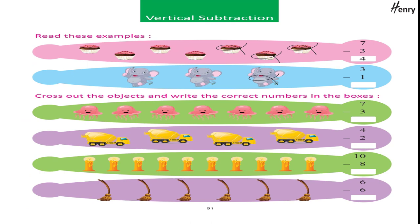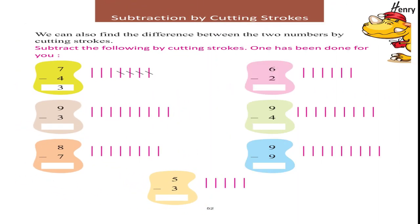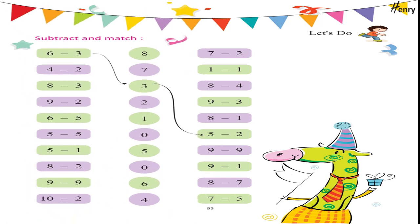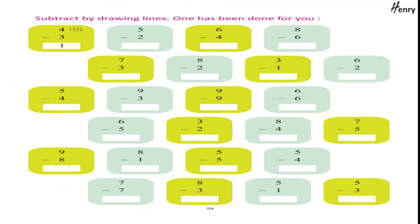Vertical subtraction: read these examples. Cross out the objects and write the correct numbers in the boxes. Subtraction by cutting strokes: we can also find the difference between two numbers by cutting strokes. Subtract the following by cutting strokes — one has been done for you. Let's do: subtract and match. Subtract by drawing lines — one has been done for you.